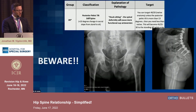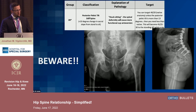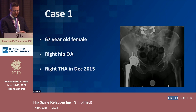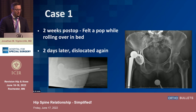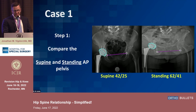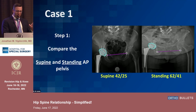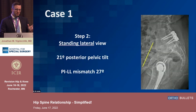The worst case scenario — and the one you can prevent preoperatively — is when you see an outlet view on your AP pelvis. This group has the highest risk of dislocation: 8 to 15 percent in the primary setting. A standing lateral reveals a large posterior pelvic tilt with the ASIS behind the pubic symphysis. The cup looks fine supine, but she's dislocating within two weeks. The standing x-ray immediately shows the cup is not in the right position — it's a cup revision, not a liner change.